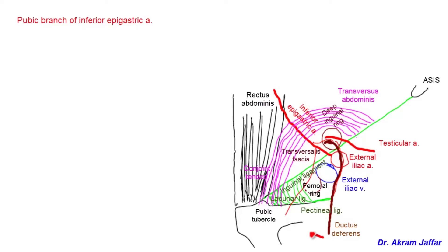This artery passing toward the obturator foramen is the obturator artery. Before it passes through the foramen, it supplies a pubic branch as well to supply the bone. This pubic branch anastomoses with the pubic branch of the inferior epigastric artery.